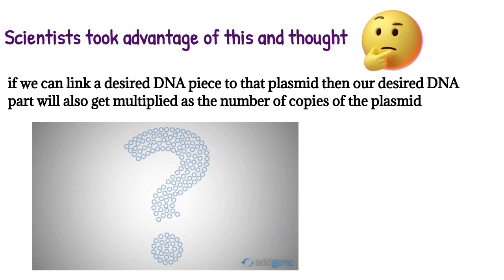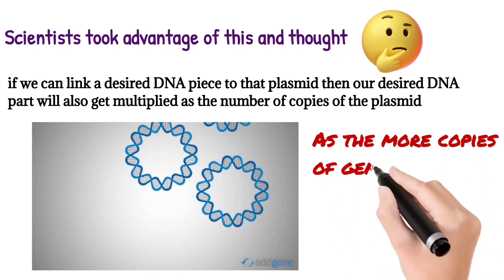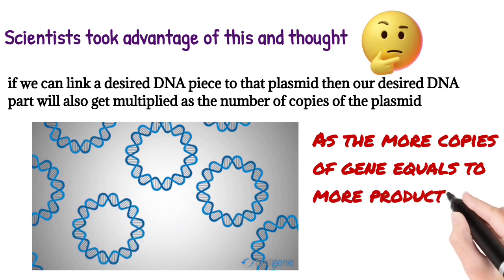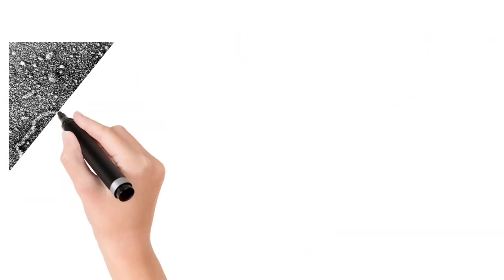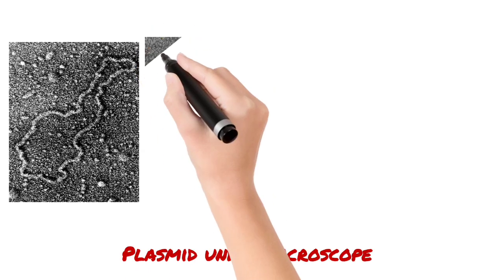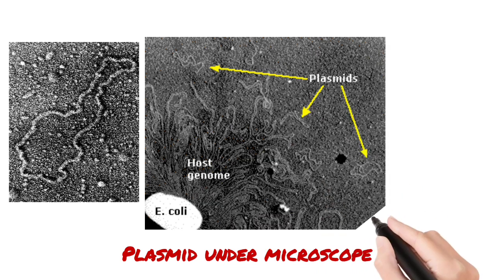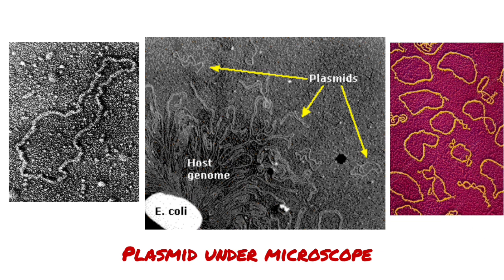Like 2 to 4, 4 to 8, and like that. As the more copies of gene equals to more product. Now here you can see the real picture of plasmid under microscope, how a plasmid actually looks like under the microscope.